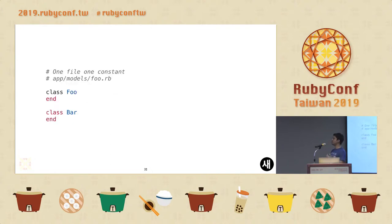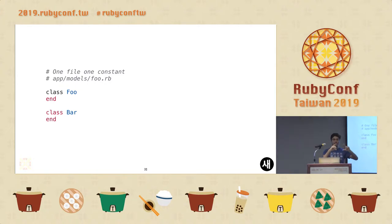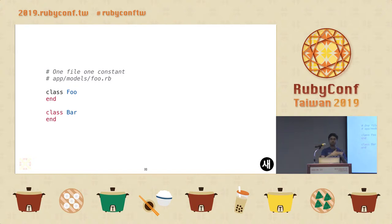One rule that Zeitwerk follows, which is pretty useful for avoiding bugs, is that there should only be one constant per file. I've seen in many projects people trying to club constants together or have multiple classes. Avoid this in Zeitwerk — auto-loading of Bar in a foo.rb file doesn't work because auto-loading is derived from the file name.